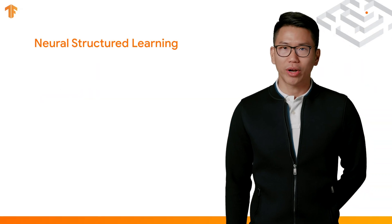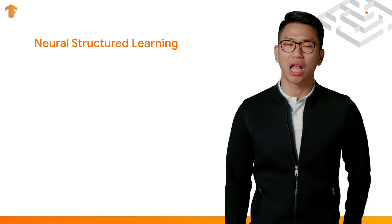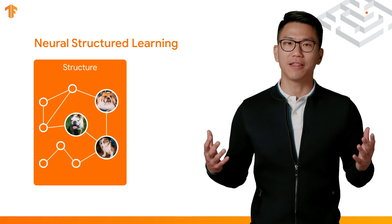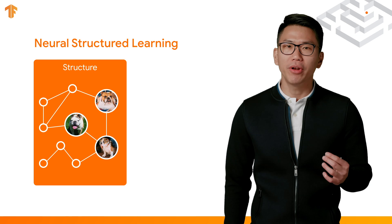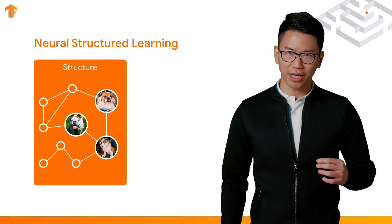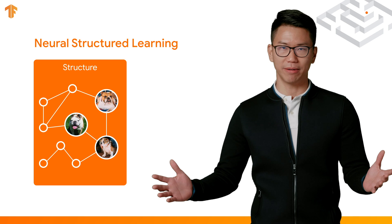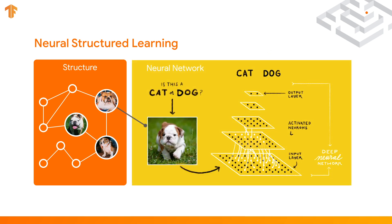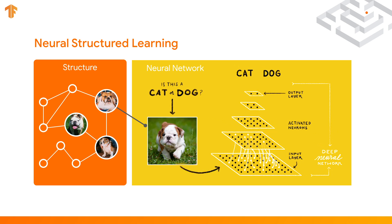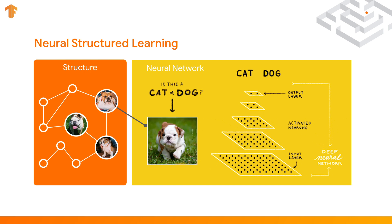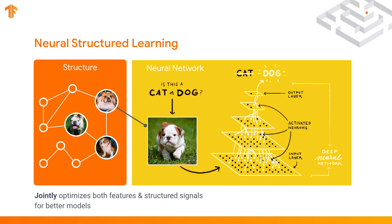Let's first quickly refresh the concept of Neural Structure Learning. This is the example we mentioned in the first episode: building a neural net to classify an image into a cat or a dog. In reality, there are usually other similar images related to that input image, forming a structure that represents the similarity among all these images. The Neural Structure Learning framework jointly optimizes the sample features and the structure signals among the samples to learn a better neural net.